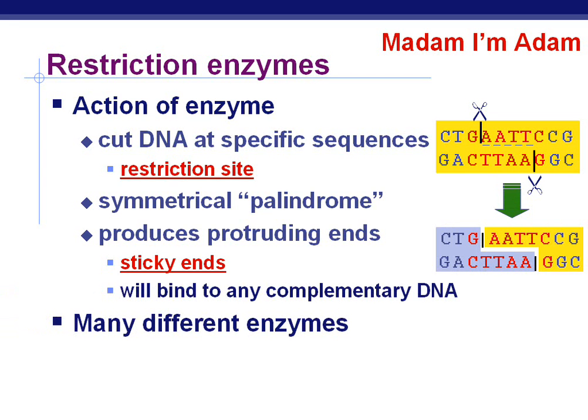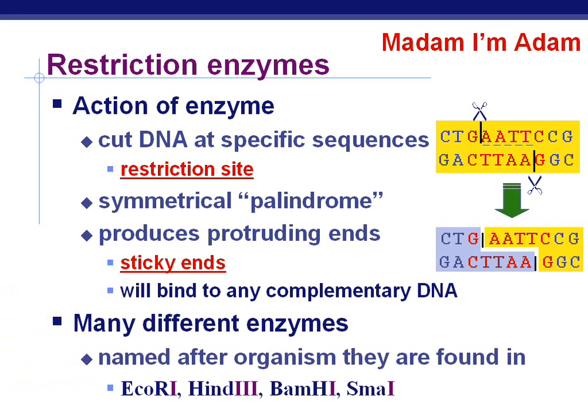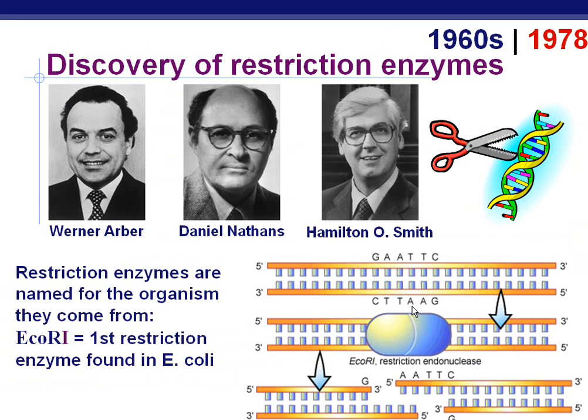There are many different restriction enzymes, and they're named after the organism that they're found in. For example, ECO-R1 is from E. coli — it's the first restriction enzyme found in E. coli. The discovery of restriction enzymes was made by these three gentlemen.